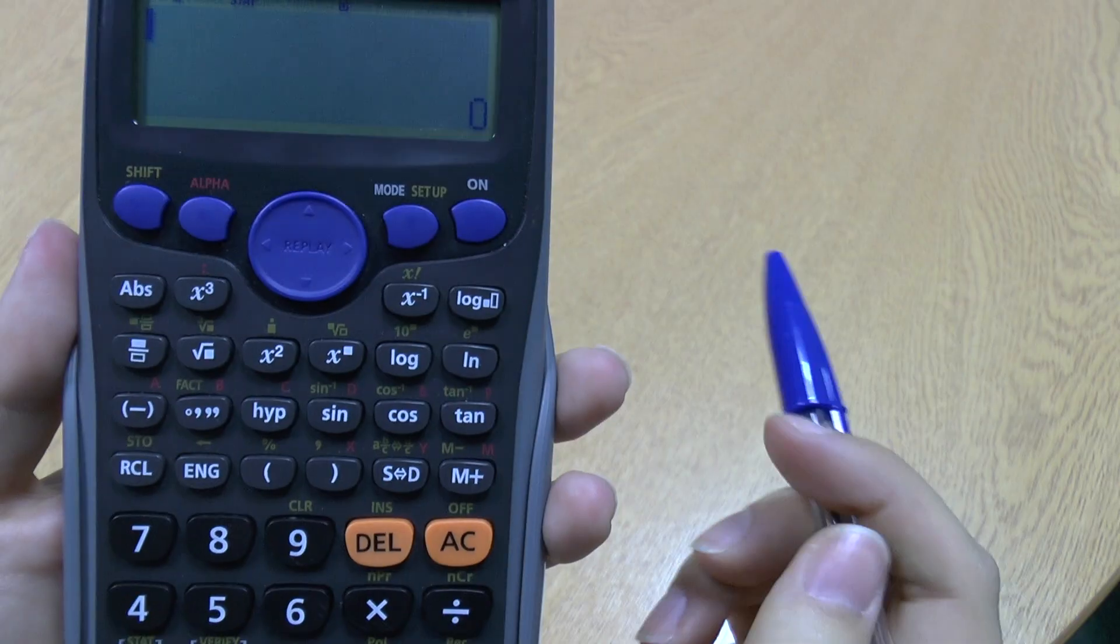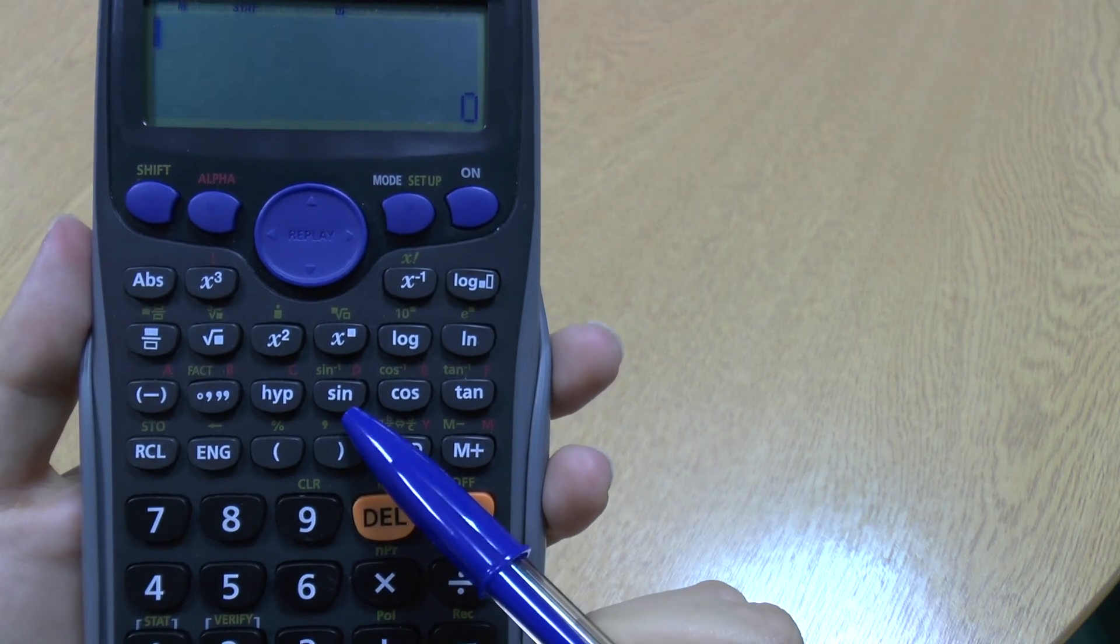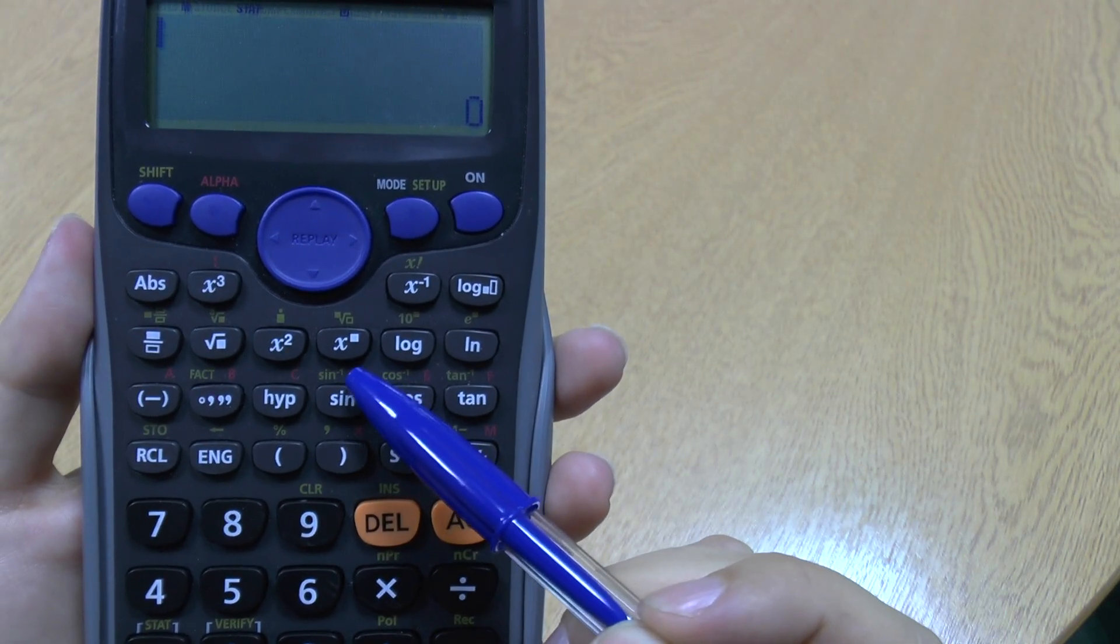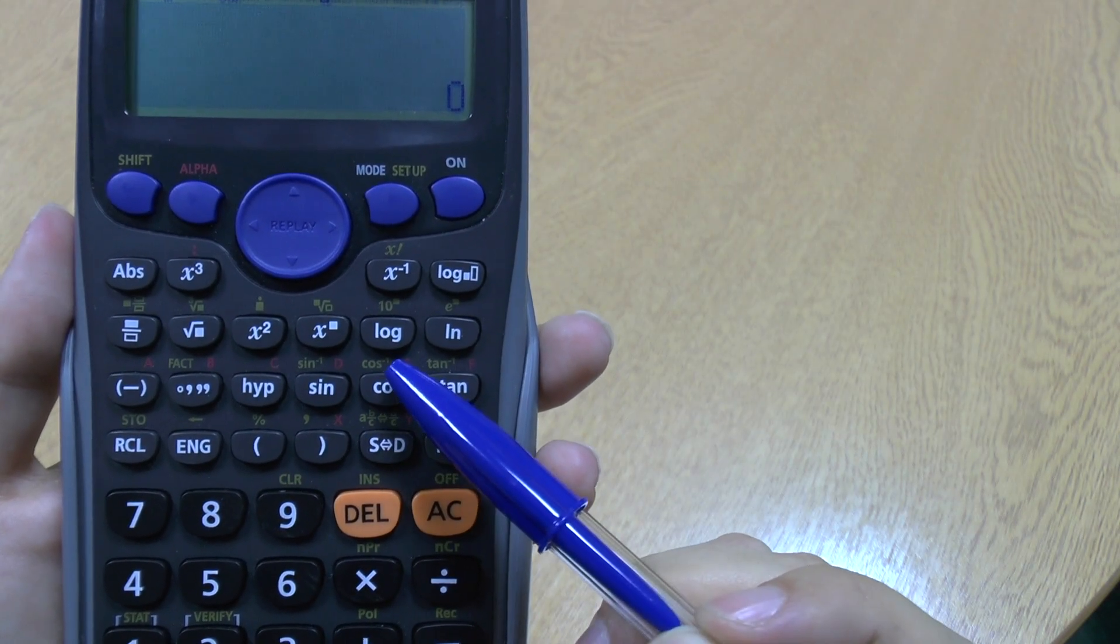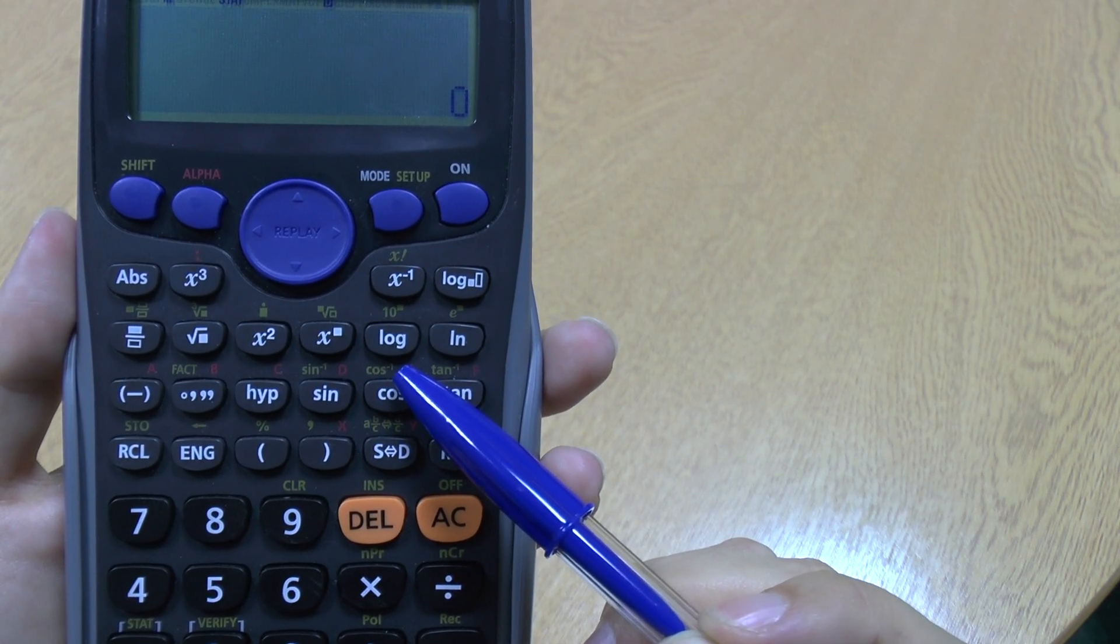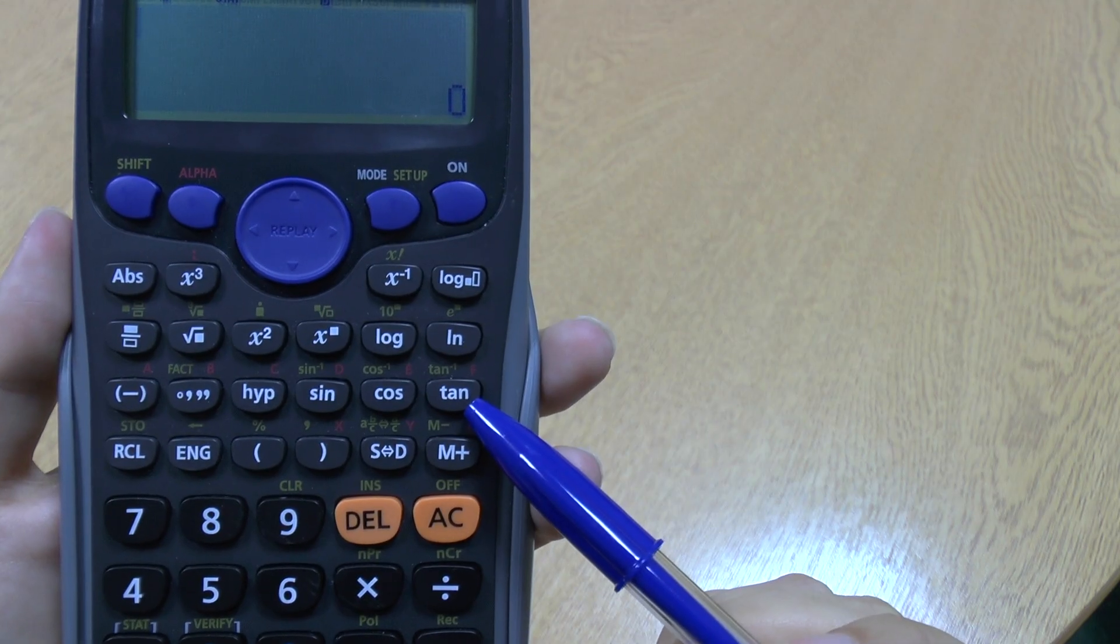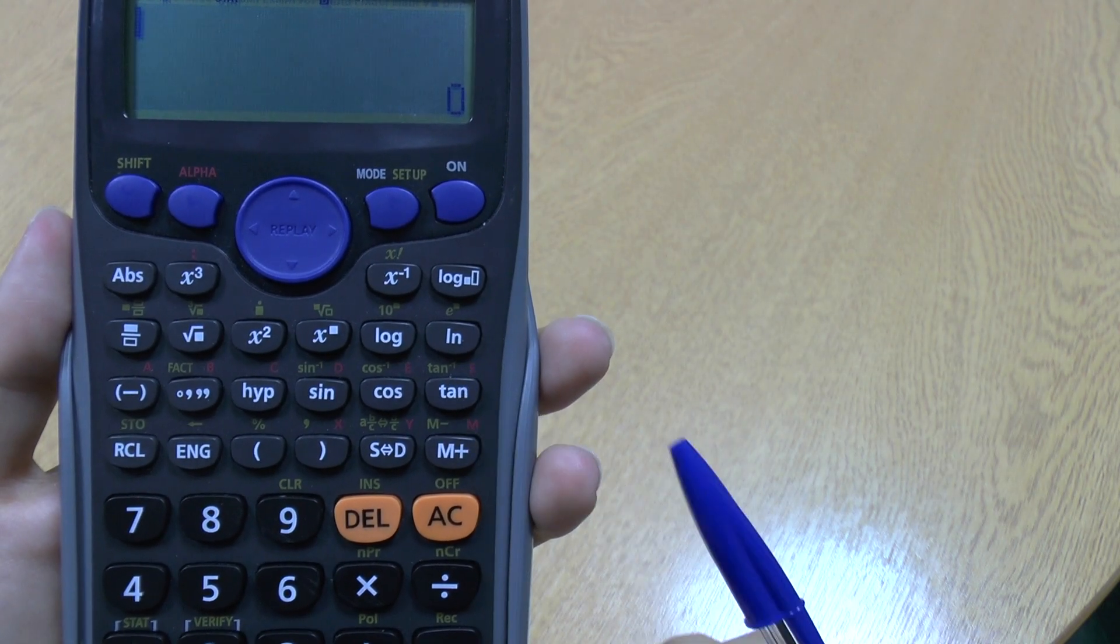So if I zoom in again, you can see here's the sine button, and above it in yellow we've got sine to the minus 1. Here's the cos button, and above it in yellow we've got cos to the minus 1. Here's the tan button, and above it in yellow we've got tan to the minus 1.